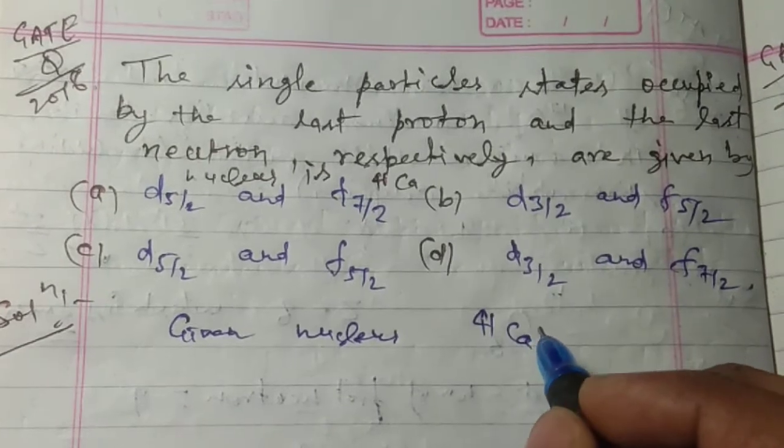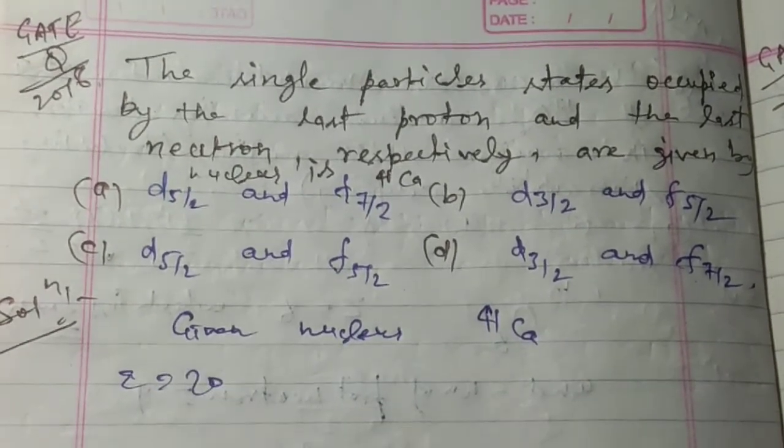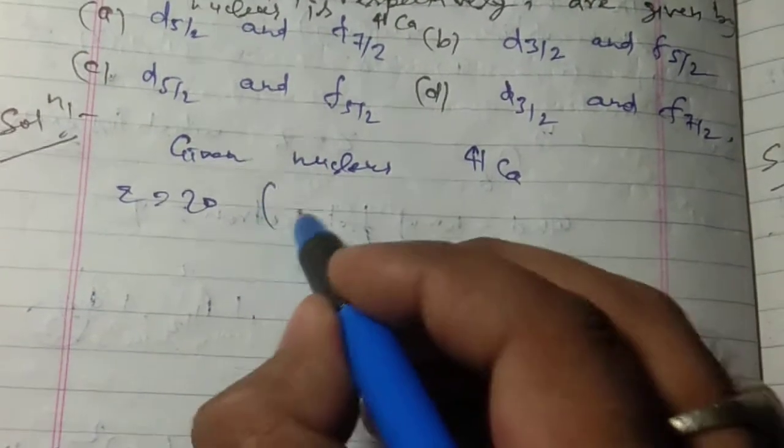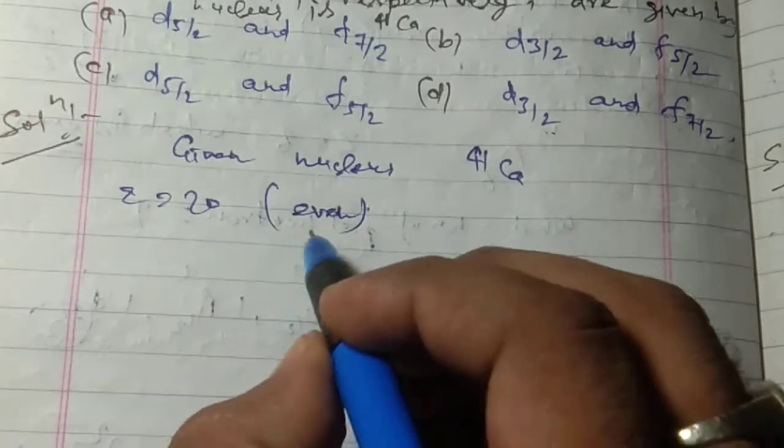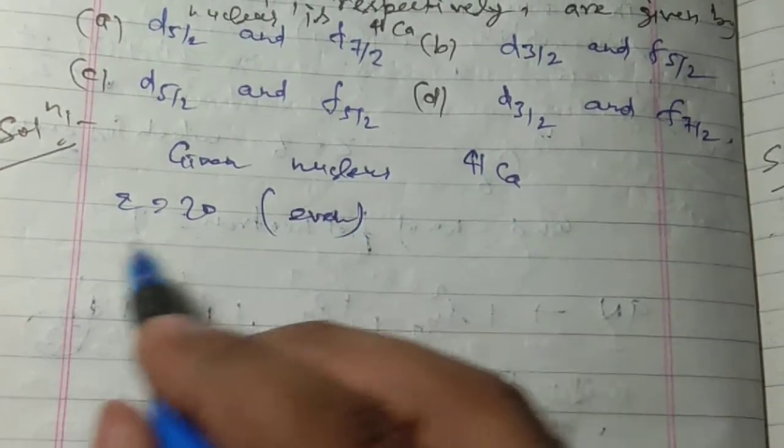In this case, the number of protons is 20, which is even. So this cannot contribute for the parity and angular momentum.